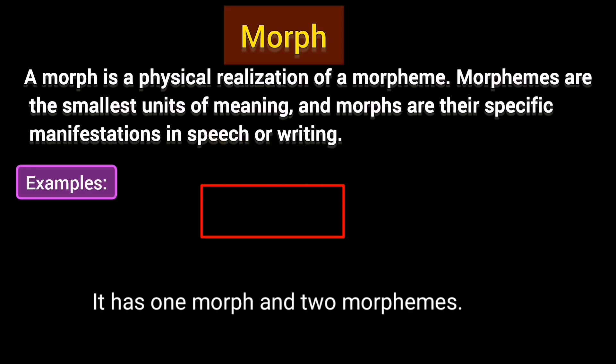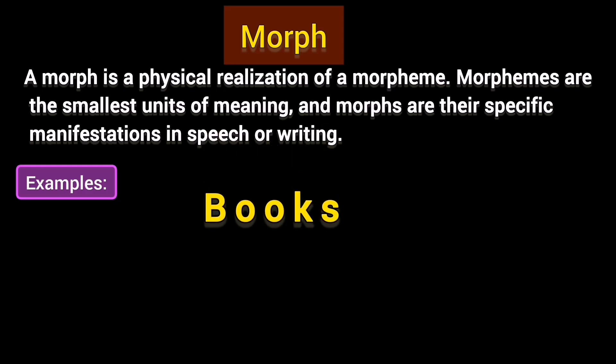Look at another example: 'books'. This word has two morphemes and also two morphs. The word 'book' is one morph, and for showing plurality there is a second morph, which is 's'. So that is what we call a morph. I hope you have enjoyed this lecture — please don't forget to like and subscribe to my channel. Thank you.